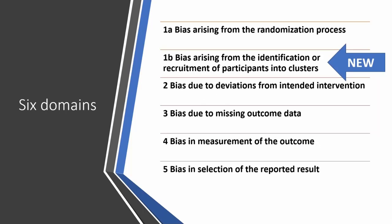As Tian Jing has outlined, there are five domains for the revised risk of bias tool. Starting with probably the main additional consideration for cluster randomised trials, we've added a sixth domain, domain 1B, which I'm going to spend some time on. For the rest of the time I'll go through the tool and show where we've added signalling questions across a number of domains, and explain why with examples.